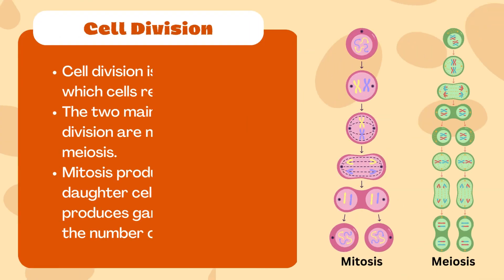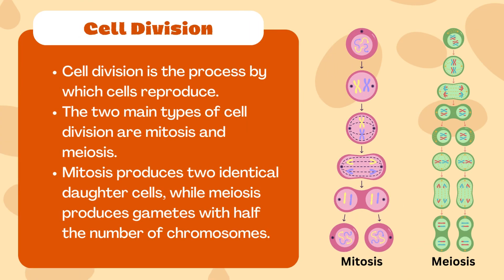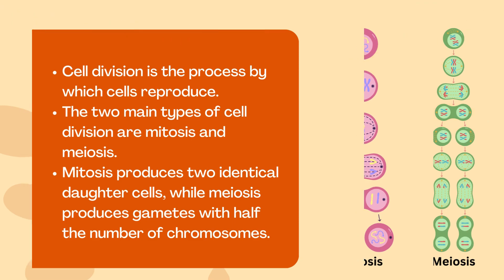Cell division is how cells reproduce. The two main types of cell division are mitosis and meiosis. Mitosis produces two identical daughter cells, each with the same number of chromosomes as the parent cell, while meiosis produces gametes with half the number of chromosomes for sexual reproduction.